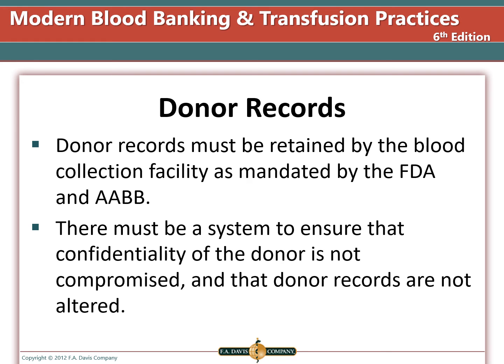The donor records must be retained by the blood collection facility as mandated by the FDA and AABB. There must be a system to ensure that the confidentiality of the donor is not compromised and that donor records are not altered. The donor center must be able to determine who donated a given unit of blood and where the unit was sent. The transfusion facility must be able to determine if a unit of blood was transfused, expired, or destroyed. If a patient contracts a post-donation infection, it must be traced back to the donor.